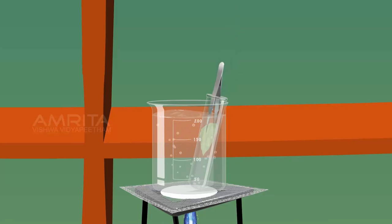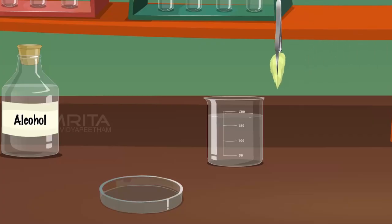Take the leaf from the boiling tube using forceps. Dip the leaf in a beaker containing distilled water and wash it. Place the leaf in a petri dish.